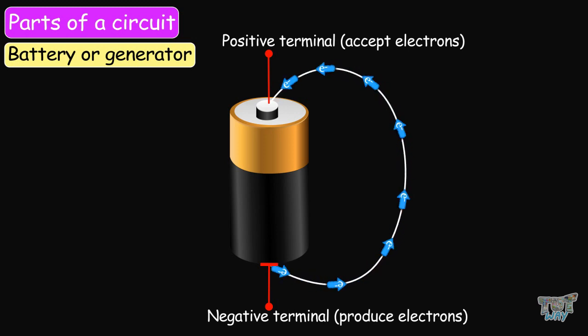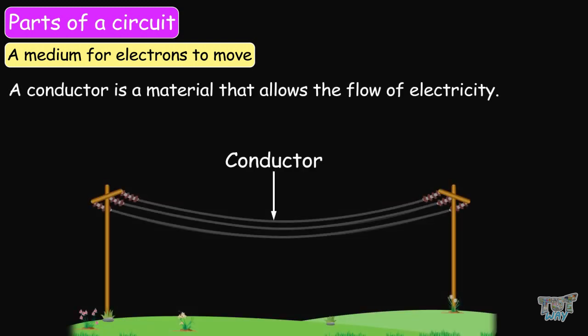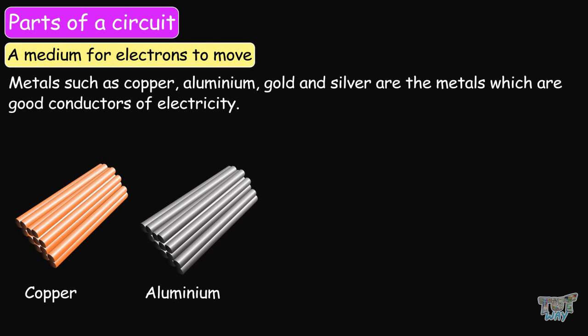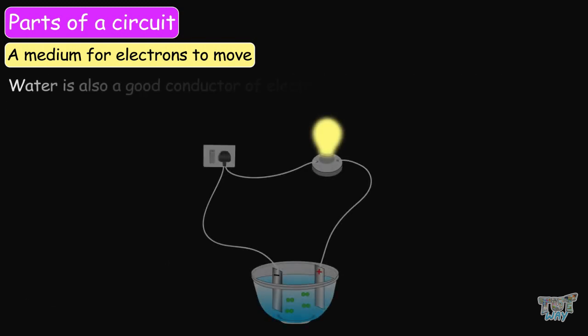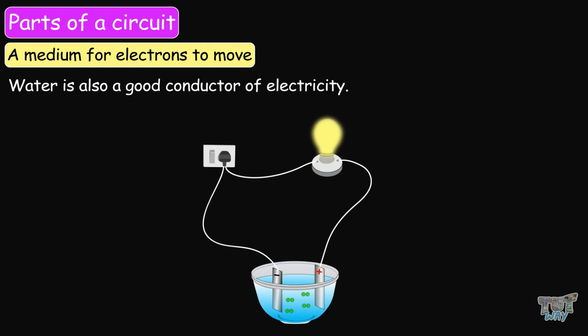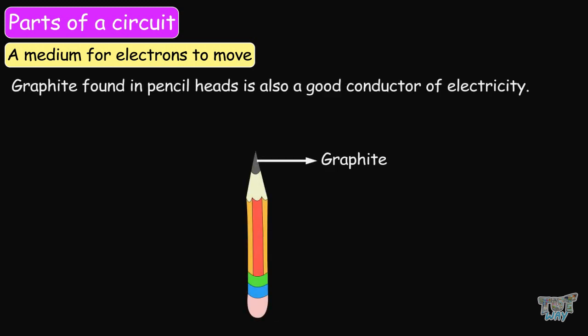The second part of the circuit is a medium for the electrons to move — the conductor. A conductor is a material that allows the flow of electricity or electrons. Metals such as copper, aluminum, gold, and silver are good conductors of electricity, so wires are mainly made up of copper or aluminum. Gold and silver wires are also used, but in rare cases. Water is also a good conductor of electricity, and graphite found in pencil heads is also a good conductor.